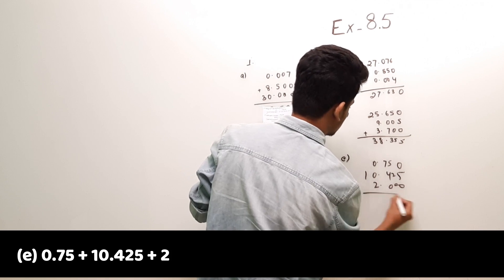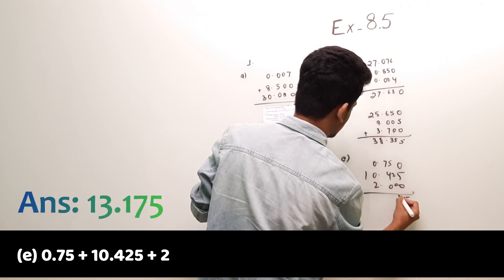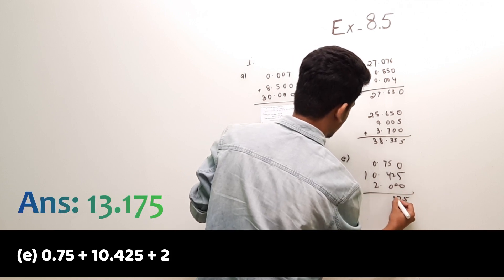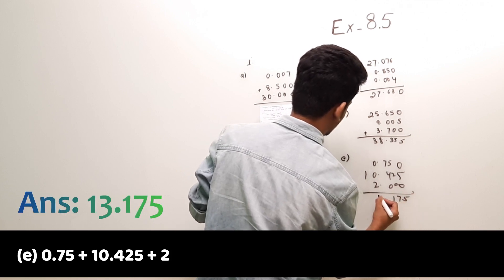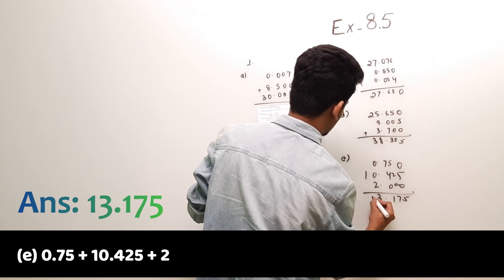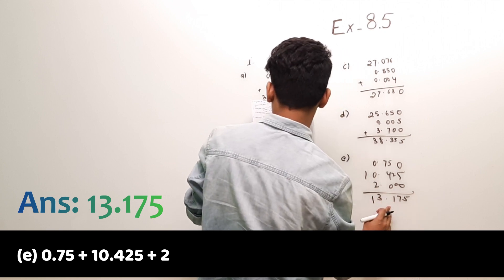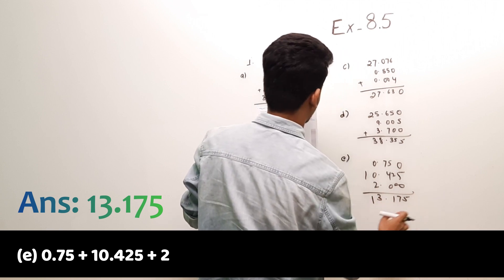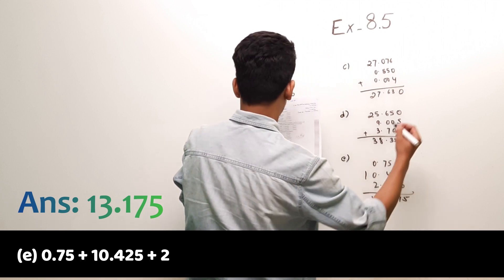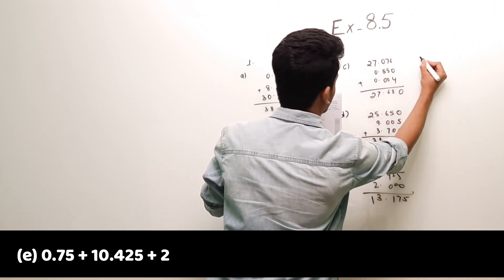Part (e): 28.69 — wait, it's 0.75 plus 10.425 plus 2. Working through: carry 1, and the answer is 13.175.